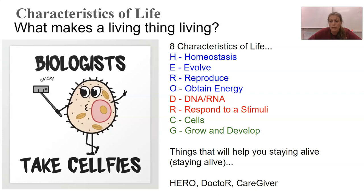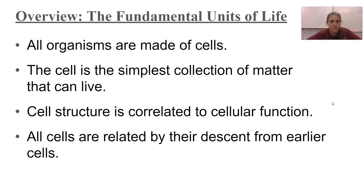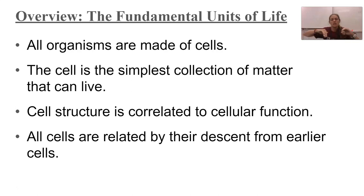Things that will help you stay alive: Heroes, Doctors, Caregivers — the eight characteristics of life. The overview is that all organisms are made of cells — you have to be, to be a living thing. The cell is the simplest collection of matter that can live. Up until the cell, you just have a bunch of macromolecules or inorganic materials clumped together that don't count as living things. A single cell is the simplest living thing there is.